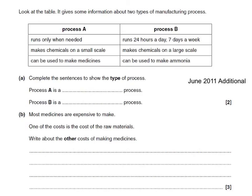Here's another exam question. A table gives information about two types of manufacturing processes, A and B. Complete sentences to show the type of process. Process A, which runs only when it's needed, would be a batch process. Process B, which runs 24/7, would be a continuous process.